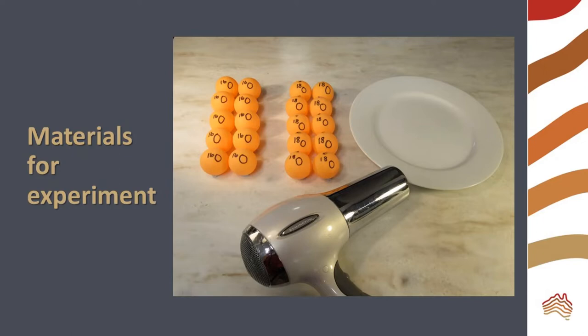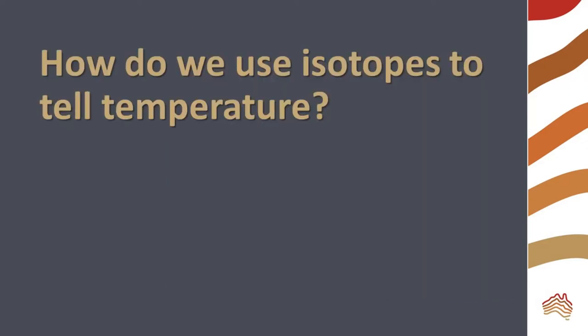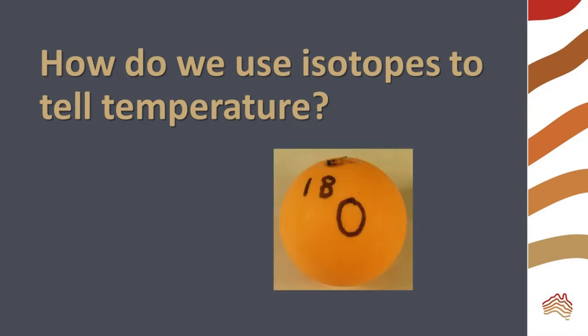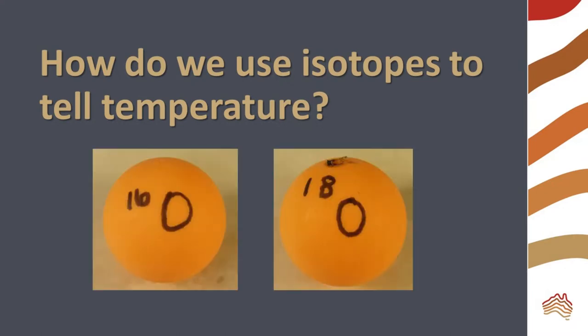O18 is the heavier isotope of oxygen and is less common in reality. However, in our model, we will have equal numbers of both isotopes. There are two common, stable isotopes of oxygen: O18 and O16. The numbers refer to their mass. These oxygen isotopes are found in the oxygen in water.